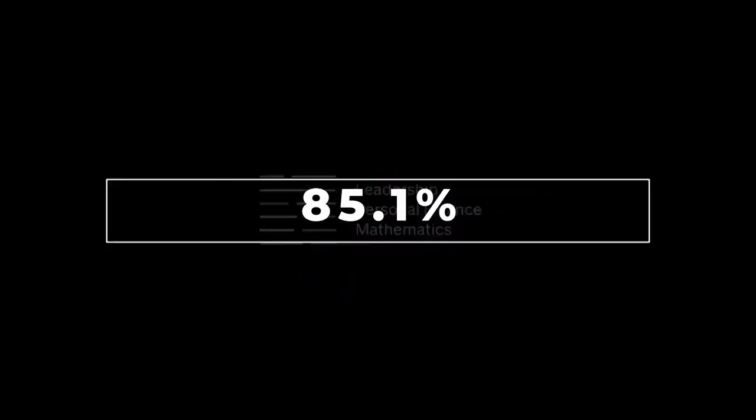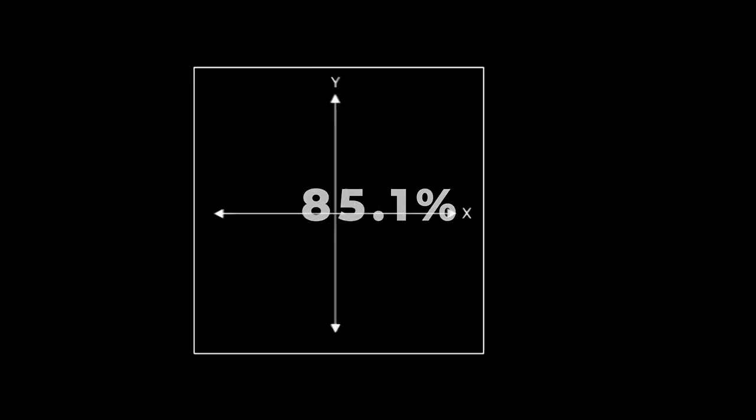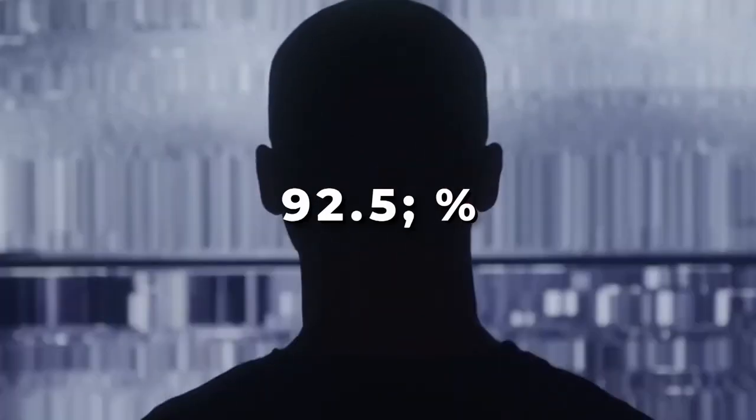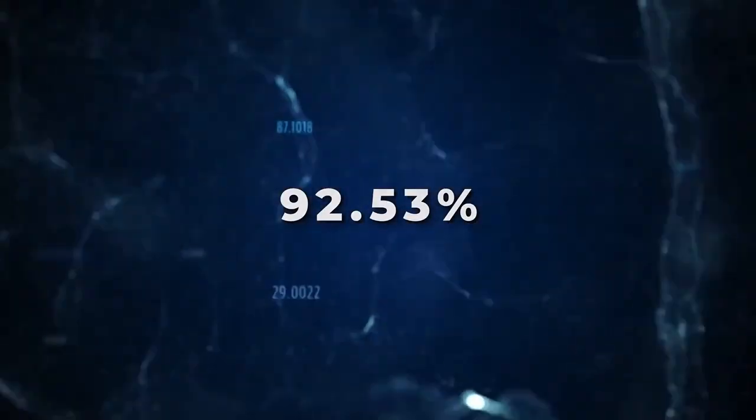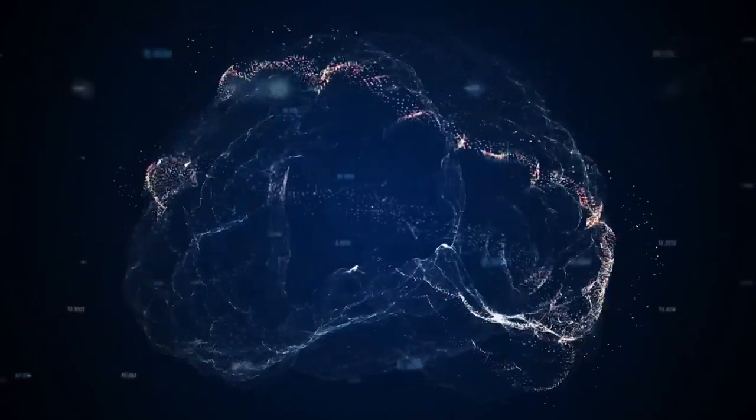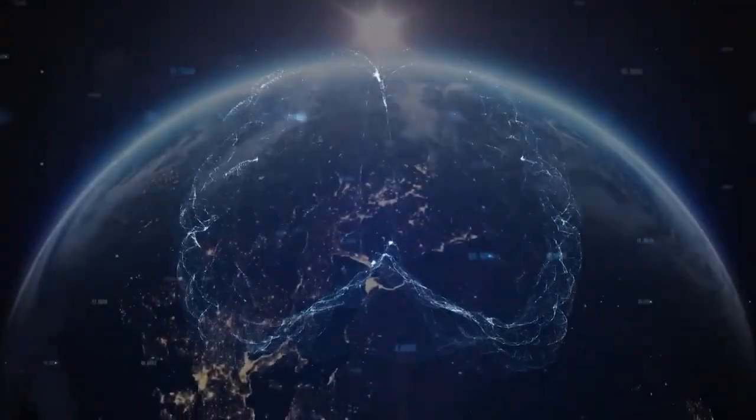Job displacement. LLAVA could be used to automate tasks that are currently done by humans, which could lead to job displacement. For example, LLAVA could be used to generate news articles, write marketing copy, or even translate languages. This could put many people out of work.